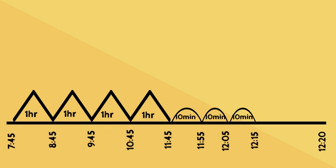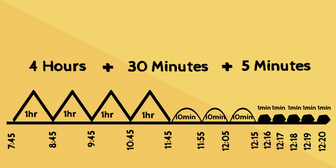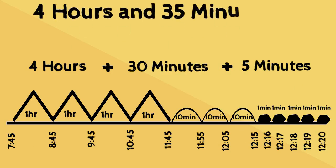Now I'm very close to 12:20, so I'm going to count by one minute. One minute past 12:15 is 12:16, one more is 12:17, one more is 12:19, and one last minute past is 12:20. Now I've reached my end time. I'm going to count all the hours, 10 minutes, and 1 minutes I've counted and add them up. Four hours, plus three 10-minutes which makes 30 minutes, plus five 1-minutes which makes 5 minutes. Sara has been at school for four hours and 35 minutes.